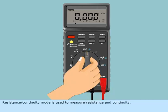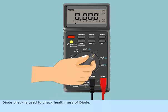Resistance or continuity mode is used to measure resistance and continuity. Diode Check is used to check healthiness of diode.